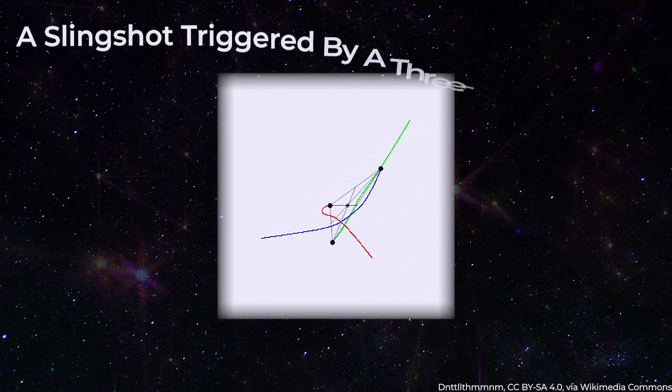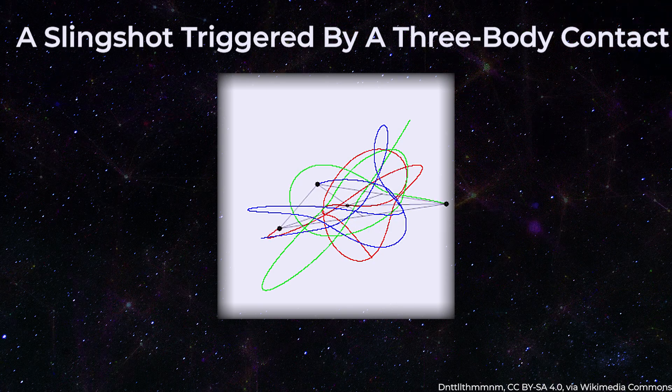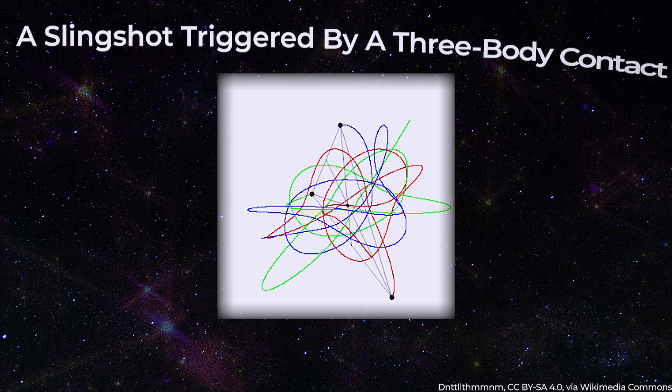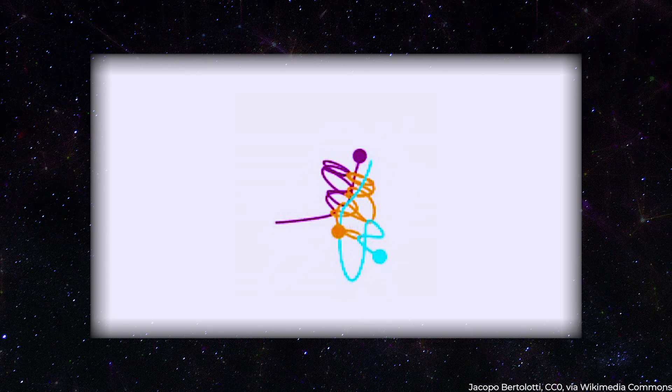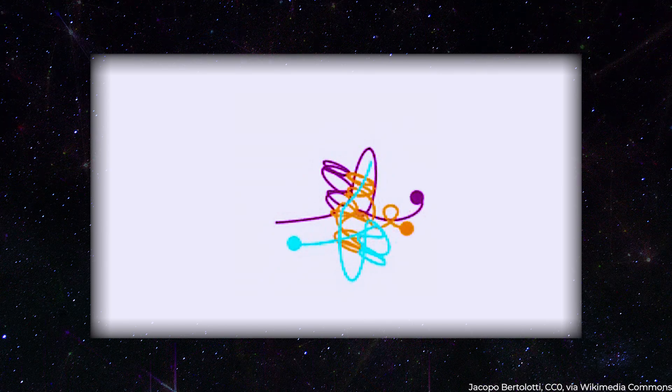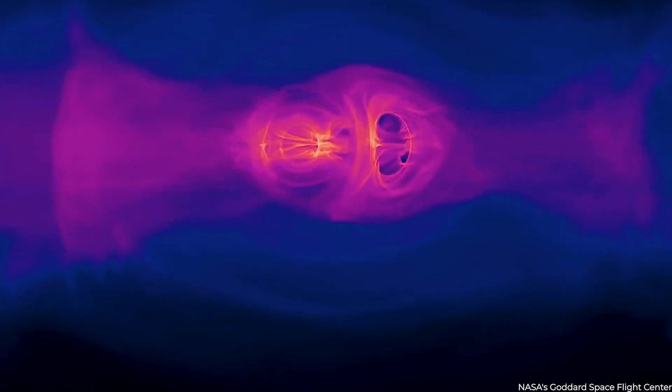According to the team, a slingshot triggered by a three-body contact is the most plausible scenario that explains what they observed. In the case of three bodies of comparable masses, gravitational interactions often create a binary and the ejection of the third body.